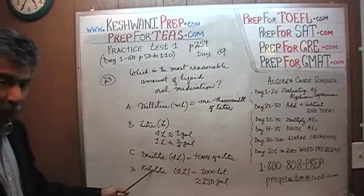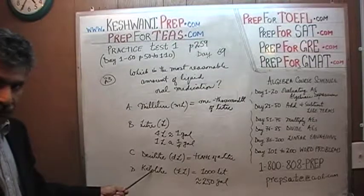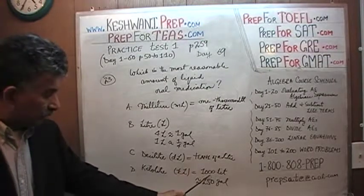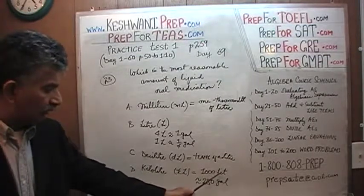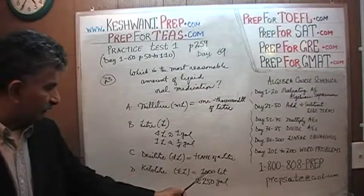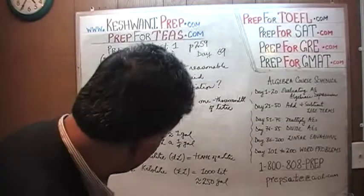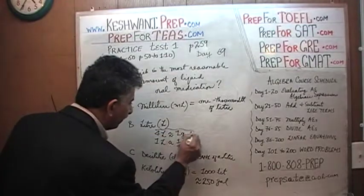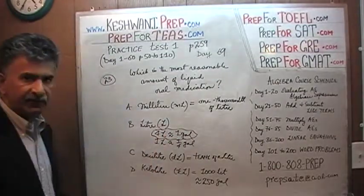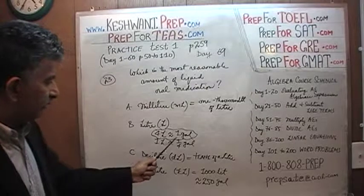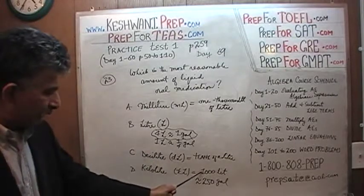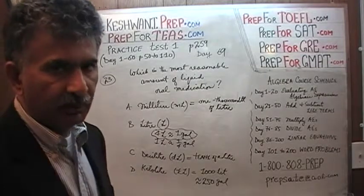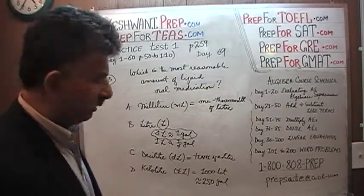The bottom one is kiloliter. Kilo means 1,000, and therefore kiloliter would be 1,000 liters. Just to give you some idea of what 1,000 liters actually means — we learned a long time ago that approximately 4 liters makes 1 gallon. Therefore, 1,000 liters is actually 250 gallons, and I doubt very much if you are going to give somebody 250 gallons of oral medication.